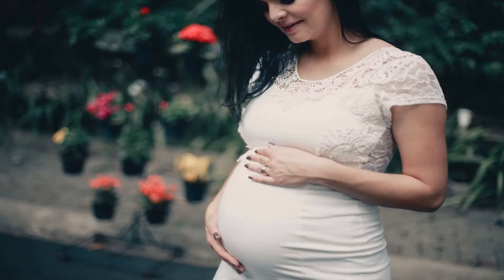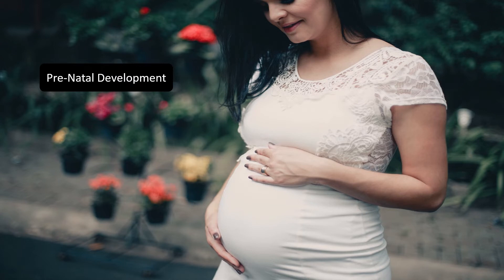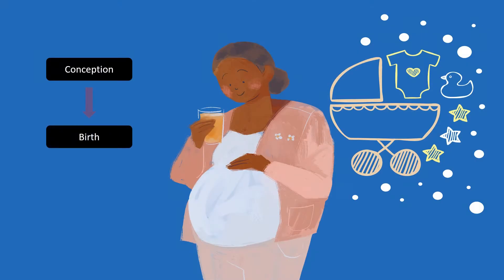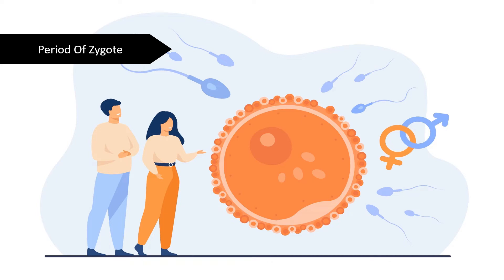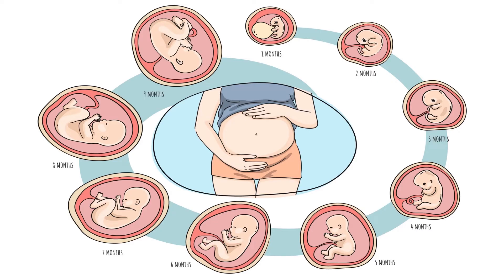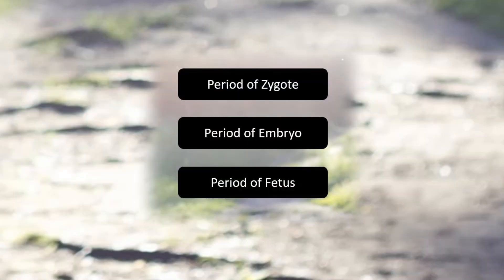Why is prenatal development taken into consideration? Prenatal development occurs before the birth of the child, that is from conception up to birth. This is very important in one's life because whatever the mother thinks and feels affects the child in the womb. Prenatal development can be categorized into three: the period of the zygote, from fertilization to end of two weeks; the period of the embryo, two weeks to two lunar months; and the period of the fetus, end of two months till birth. These three phases denote the prenatal development.